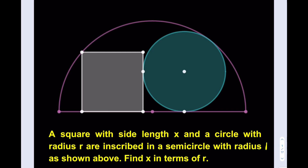We know that the side length for the square is x, so let's go ahead and write that down. We know that the radius of the circle is r — the green one. I'm going to draw the radius here, and then from the center of the semicircle, connect these two centers. We're trying to take advantage of the fact that the radius of the semicircle is given.